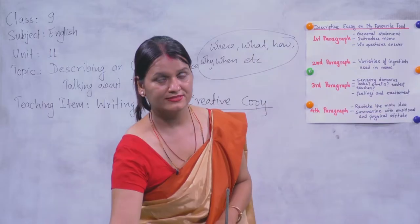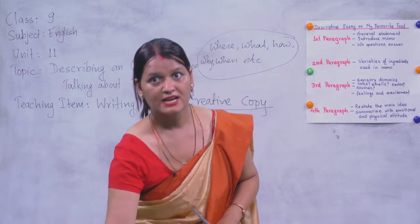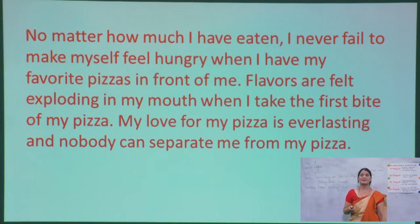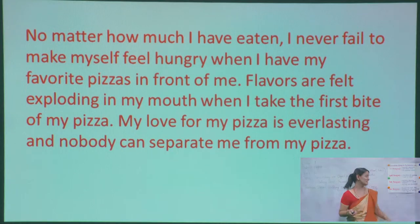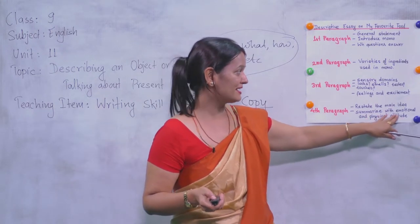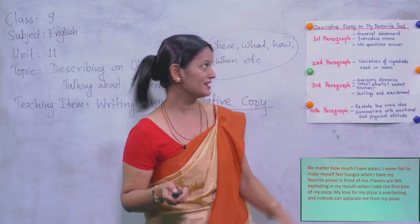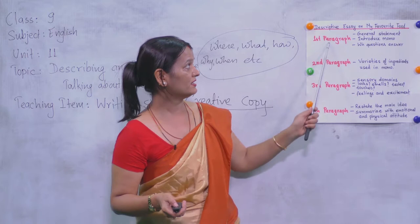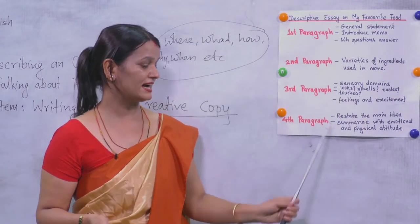So I have shared my experience and excitement about eating pizza. This is the third paragraph. As you see, I have explained about sensory domains — sense organs: what it looks like, how it smells, taste and touch — and then included my feelings and excitement. Now the last paragraph: 'No matter how much I have eaten, I never fail to make myself feel hungry when I have my favorite pizza in front of me. Flavors are felt exploding in my mouth when I take the first bite. My love for pizza is everlasting.' So in this way, in four paragraphs, we can write a descriptive essay about any food item.